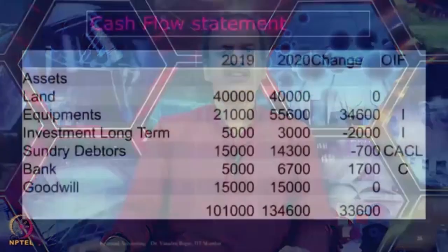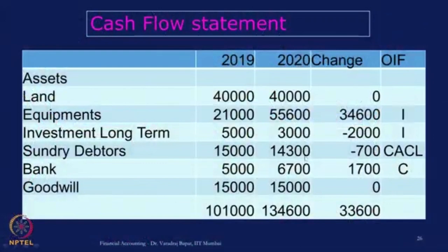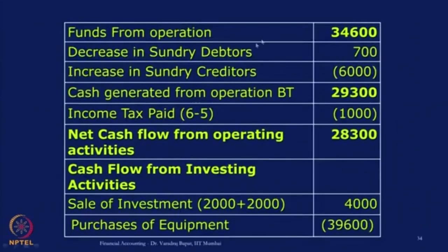Going back to the balance sheet, there was long-term investment marked as I, minus 2,000 — that means from 5,000 it has gone down to 3,000. So we have sold investment and received 2,000. But we cannot directly write 2,000 in the cash flow because there will be some profit or loss on sale of investment. In P&L there was an item called profit on sale of investment — 2,000 — marked as I/O plus minus. In I, it is plus. So 2,000 cost of investment plus 2,000 profit gives a total sale value of 4,000. We were not given the sale value; we calculated it. So sale of investment: 2,000 plus 2,000 = 4,000 is the inflow for the year.